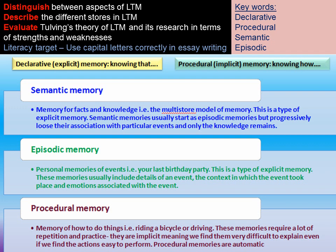Procedural memory is skillful memory — the memories of how you do things, like how you ride a bike or drive a car. These memories require a lot of practice and repetition. They are implicit memories, which are memories of how we do things, so we might find these quite difficult to explain. If you had to explain to somebody how you learned to balance to ride a bike, you might find that particularly difficult.